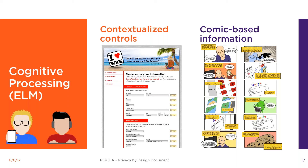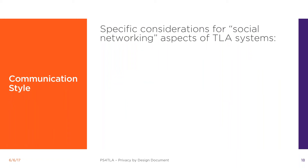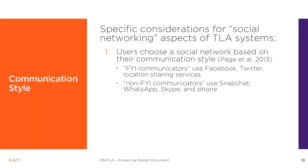Now we'll talk about another aspect of privacy: communication. In the spirit of social learning, TLA-based applications may have social networking components. Different types of users prefer different types of social networks. FYI communicators are more likely to use passive, asynchronous, one-to-many services like Facebook, Twitter, and location sharing. Non-FYI communicators prefer active, synchronous, one-to-one services like WhatsApp, Skype, or the telephone. Even within a given social network, people use different privacy management strategies and make a selection from available mechanisms.